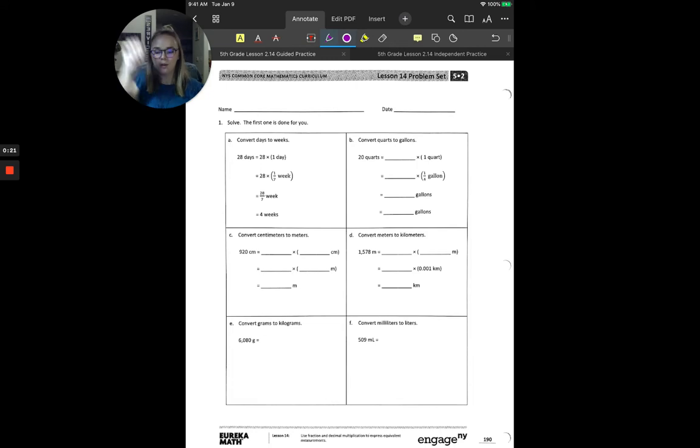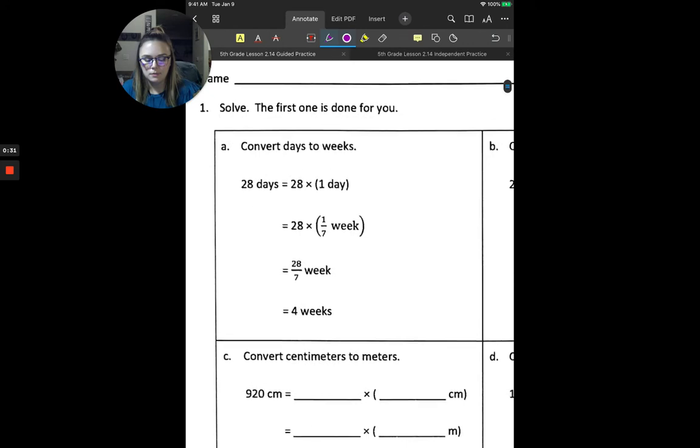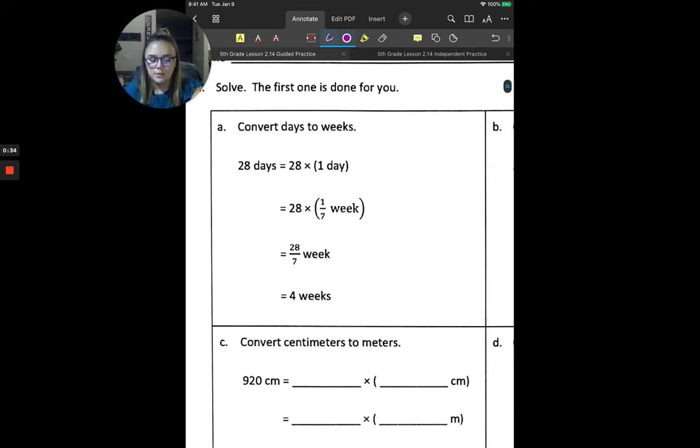So let's start with part A. Since that one's done for us, we'll use this to kind of talk about it a little bit. In A, we're converting from days to weeks. And it's telling us 28 days. So we need to figure out how many weeks 28 days is. So we can think of this as 28 days being 28 times 1 day. So our 28 is going to come down. And we need to figure out a way to say how much of a week 1 day is.